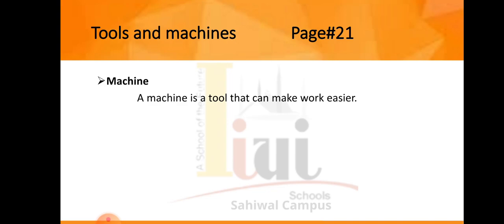Suppose you want to move an object — you might choose a tool to help you. What is a machine? A machine is a tool that can make work easier. Sometimes tools and machines can do things that your body can't do on its own.